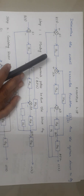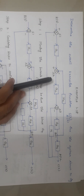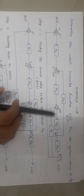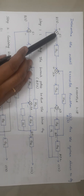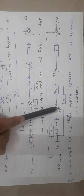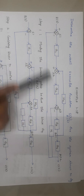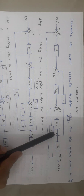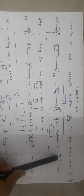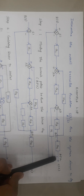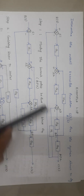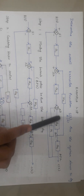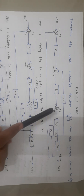First, let us see how many summing points and branch points there are. We have 3 summing points and 2 branch points. We have to reduce all these blocks into a single block.